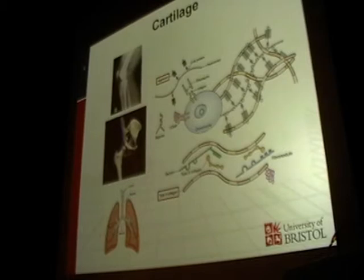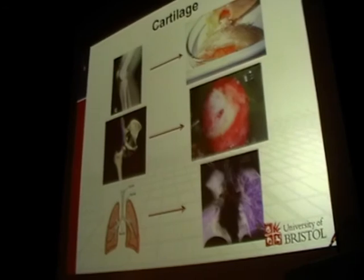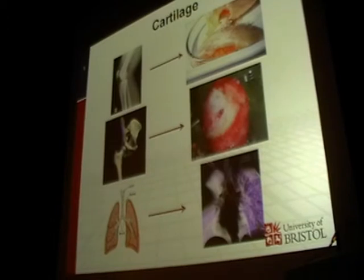Cartilage is both an avascular and an aneural tissue, and because of this, if you get damage to your cartilage, it's not able to heal itself. So if you get damage to the cartilage in your knee joint or your hip joint, the cartilage becomes eroded away and the underlying subchondral bone is exposed. The bones in the joint can rub together, and that's what leads to the pain that you see in osteoarthritis.